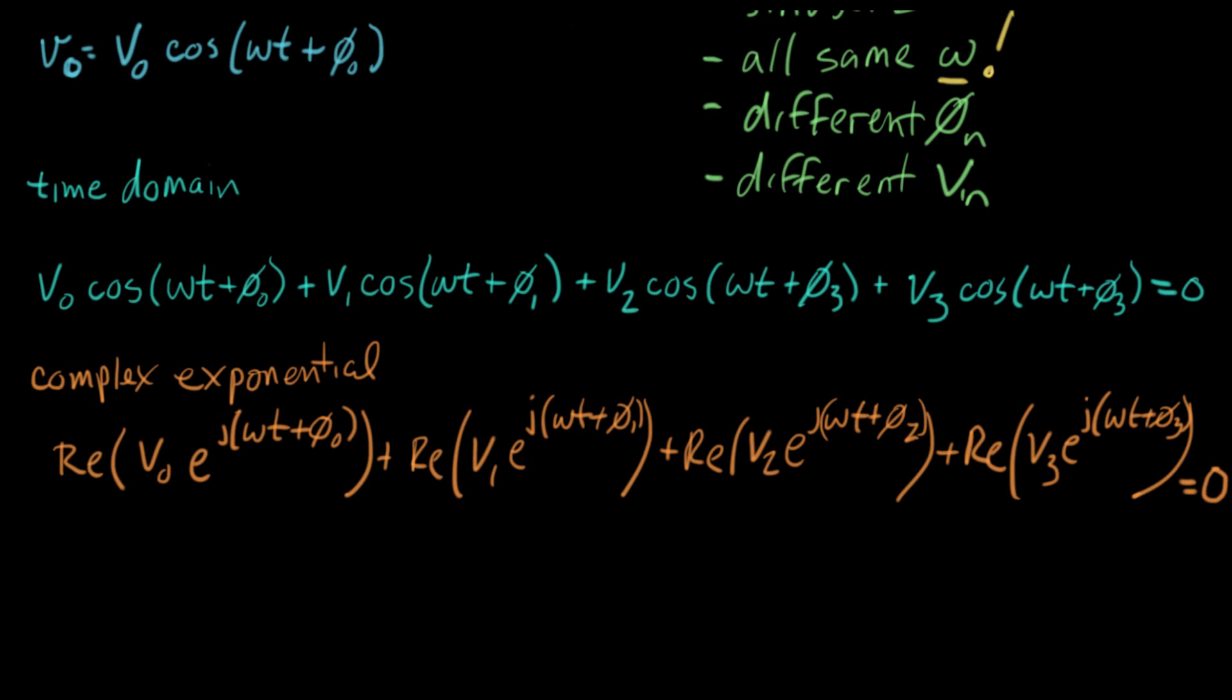One thing I can do next: we can start to factor this. I know that if I have the expression e^(j(ωt+φ)), I can change that by exponent properties to e^(jφ) times e^(jωt). So I'm gonna do this transformation on all four of these terms here.